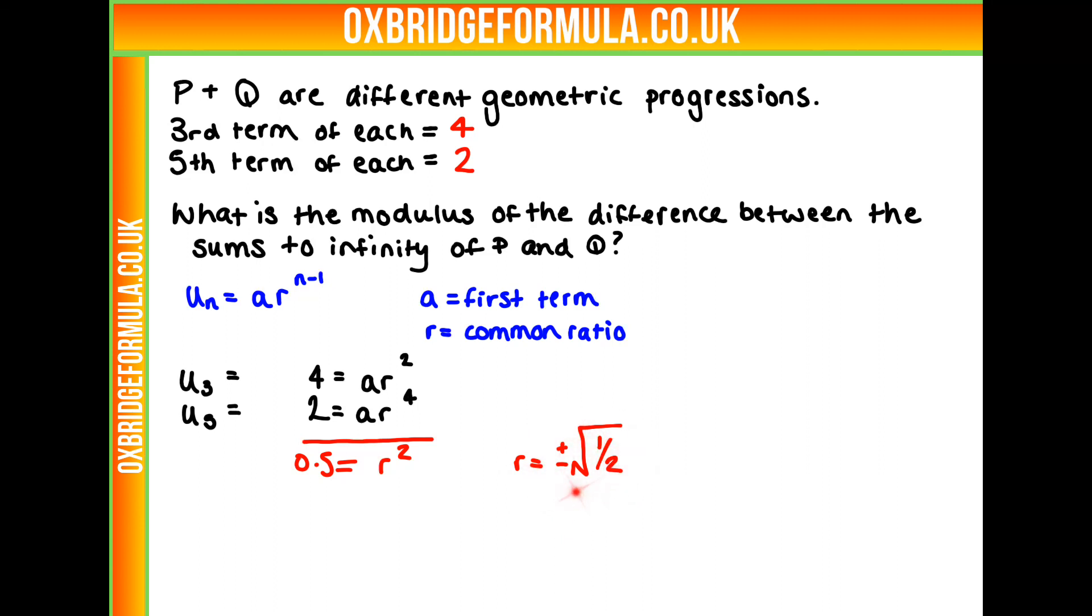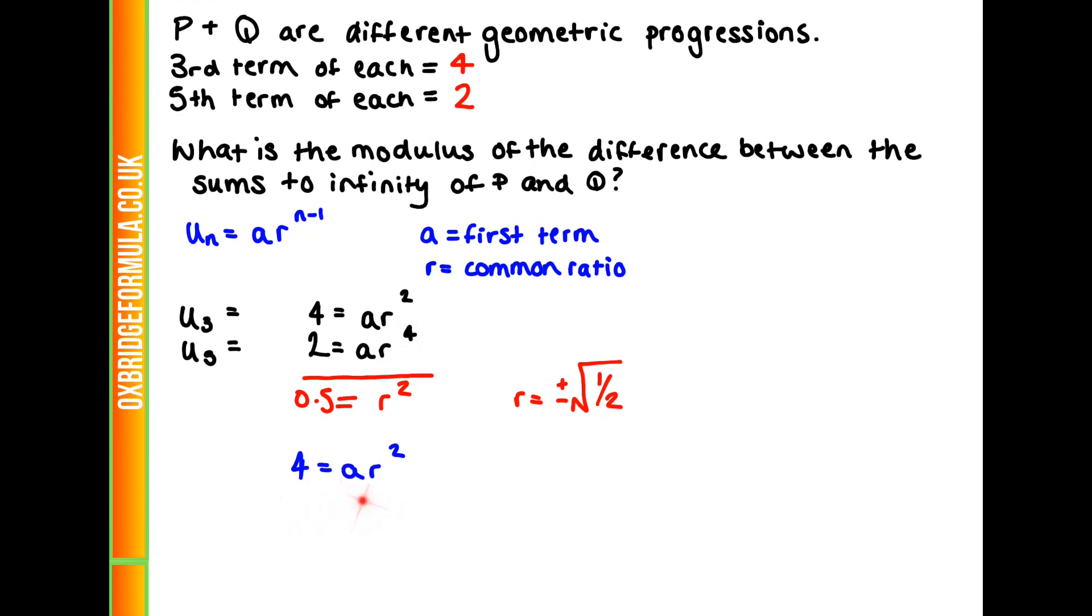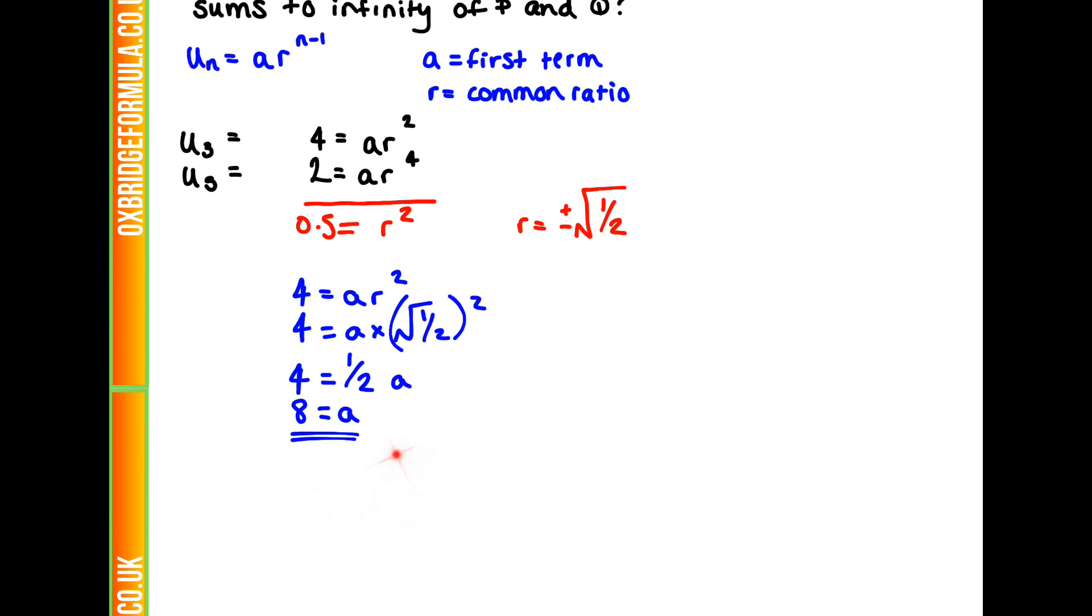We've got plus and minus here, because it could be either. One's going to be for p and one's going to be for q. Now we have our r value. We can substitute that back in and find our a value. We need that 4 equals ar squared. We can do 4 equals a times the root of a half squared, or just half of a. So that means that a is going to be 8.